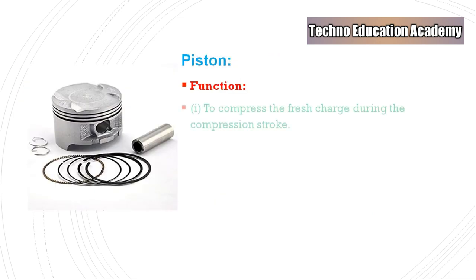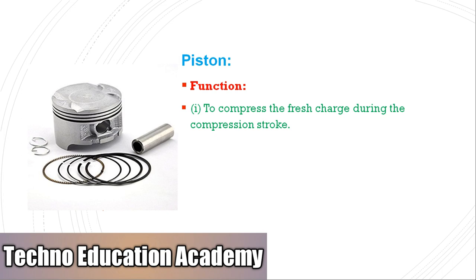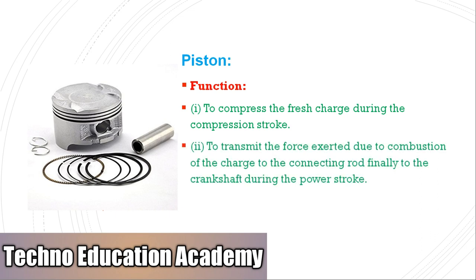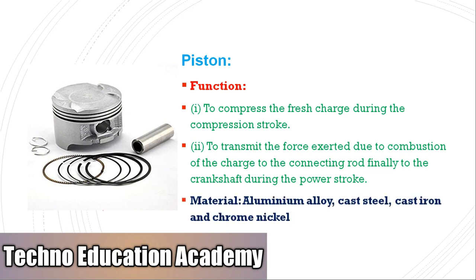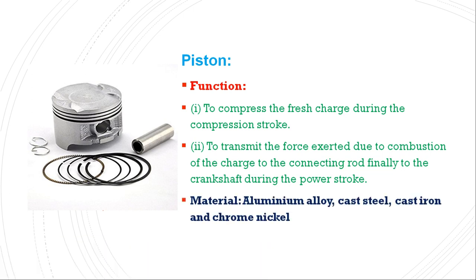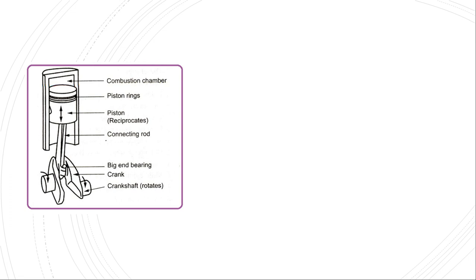The material used for the cylinder head is gray cast iron, aluminum alloy, and cast steel. The function of the piston: first, to compress the fresh charge during the compression stroke; second, to transmit the force exerted due to combustion of the charge to the connecting rod and finally to the crankshaft during the power stroke. The material used for the piston is generally aluminum alloy because of its light weight, good thermal conductivity, cast steel, cast iron, and chrome nickel.